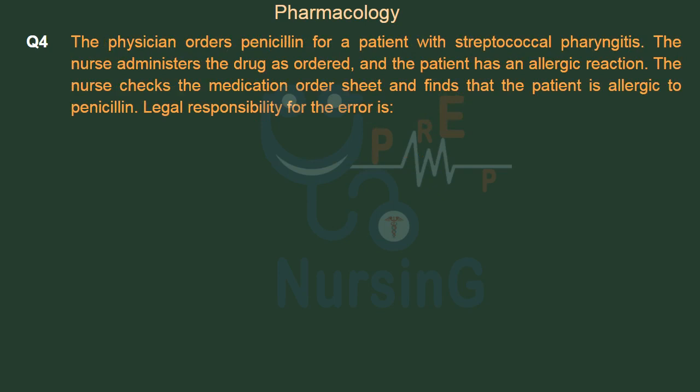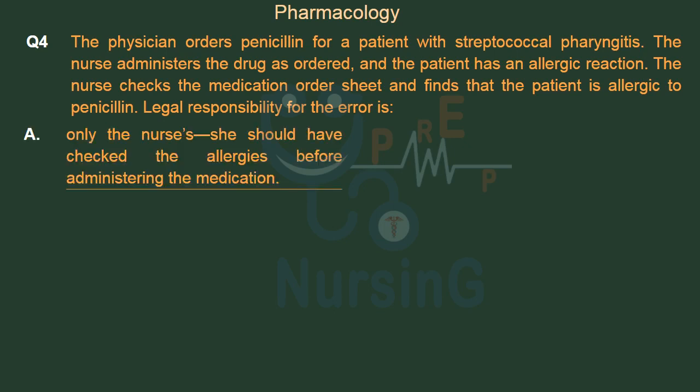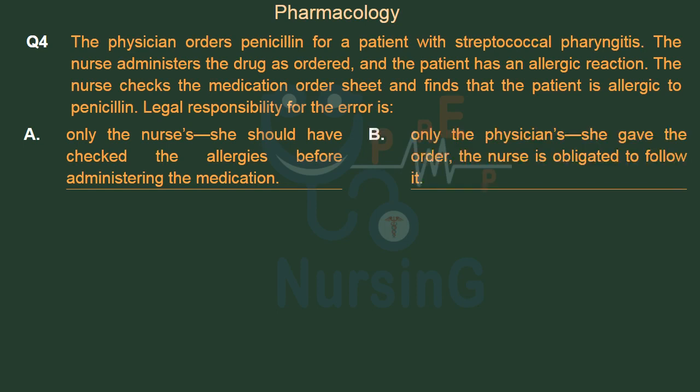The physician orders penicillin for a patient with streptococcal pharyngitis. The nurse administers the drug as ordered and the patient has an allergic reaction. The nurse checks the medication order sheet and finds that the patient is allergic to penicillin. Legal responsibility for the error is — Option A: Only the nurse's — she should have checked the allergies before administering the medication. Option B: Only the physician's — she gave the order and the nurse is obligated to follow it.